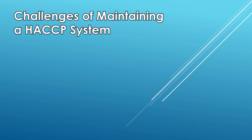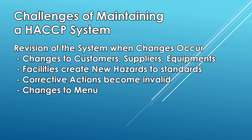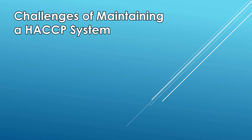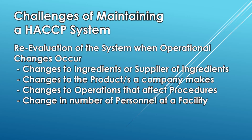A typical challenge to maintaining effectivity of a designed HACCP system is ensuring that the system is up-to-date. The system must be revised when there are changes to customers, suppliers, and equipment, or if facilities create new hazards, or if any corrective action becomes invalid, or simply when there are changes to a menu. Examples of those changes that may require re-evaluation include: changes to ingredients or the supplier of ingredients, changes to the product a company makes, changes to operations that have an impact on procedures — for example, this pandemic — and a change in number of personnel in the facility as it could have an impact on control measures, monitoring, or verification procedures.